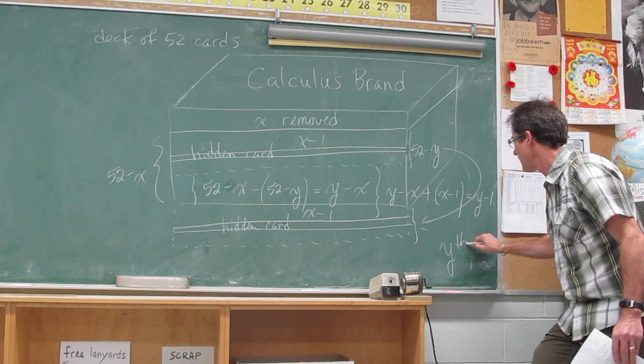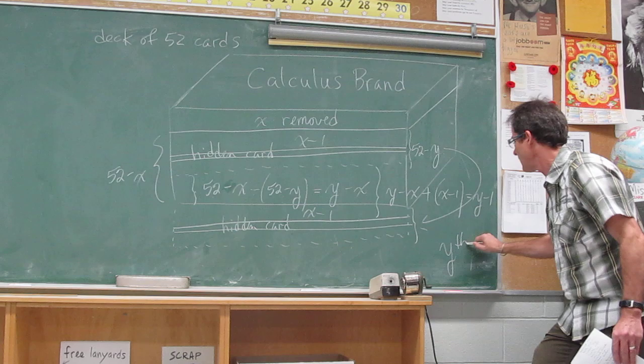So the hidden card is one more than this. It's the Yth card. And so I got Darren's number back from him. I counted from the top of the new deck. Exactly the same number as his. And that was the card. Voila. There you have it. Thank you, Dom Jun.